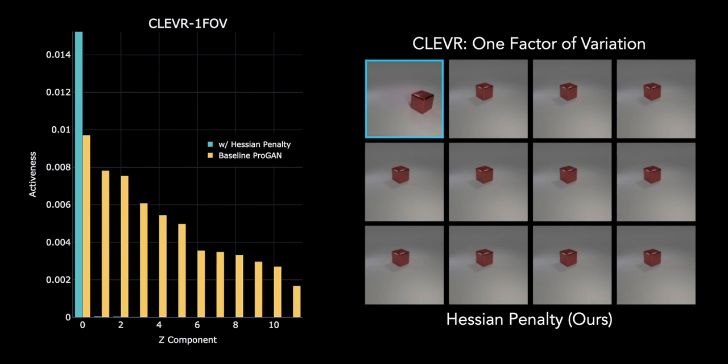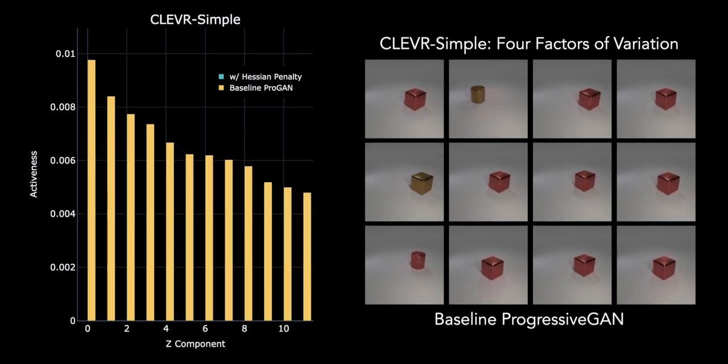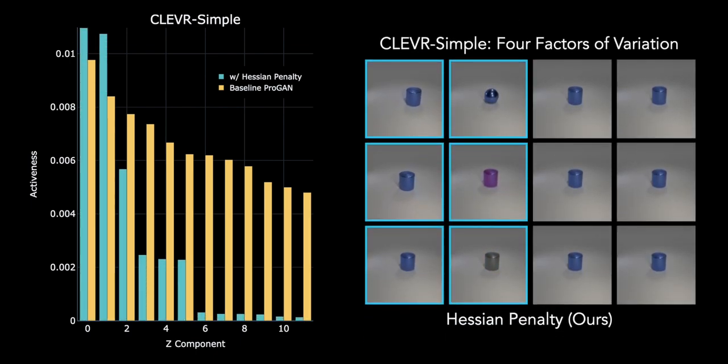We can also take a look at the activeness scores for Clever simple. Again, the trend holds that baseline PROGAN uses all of its components relatively uniformly, even though there's only four factors in the data. But training with the Hessian penalty turns off half the components. We highlight the components that were not turned off.